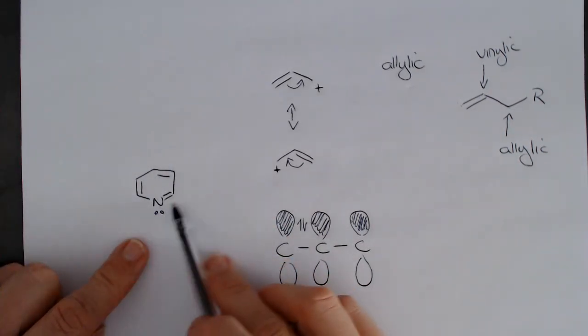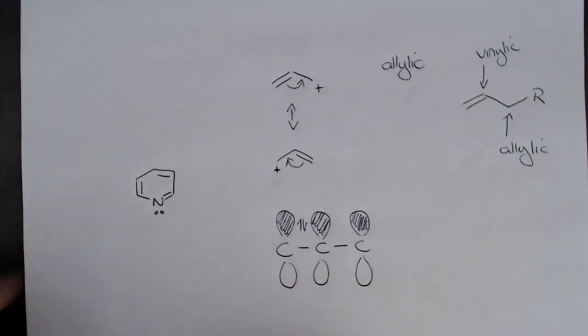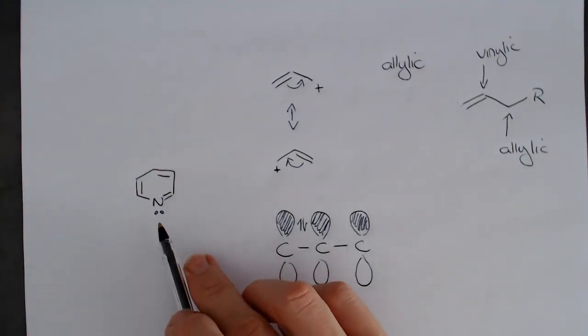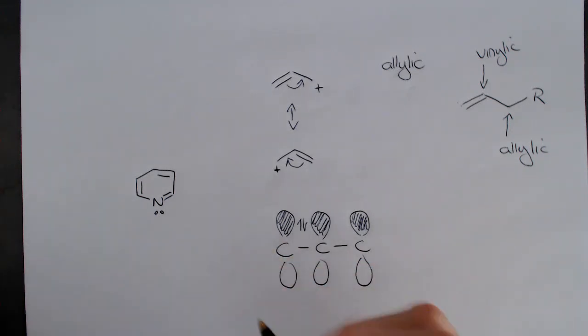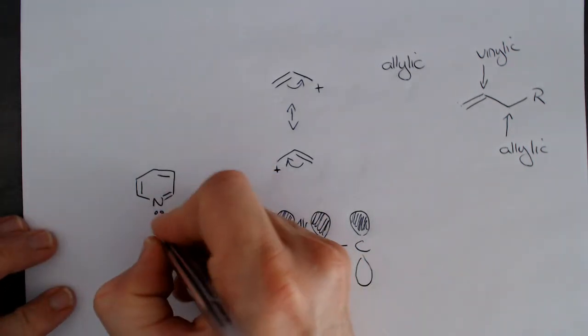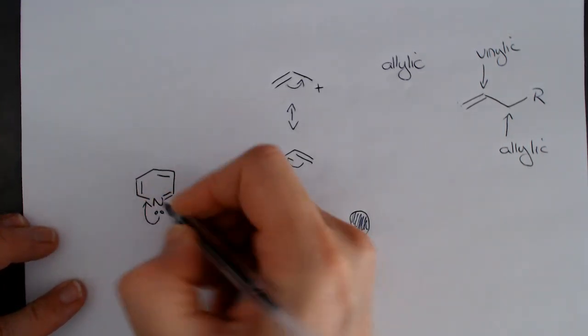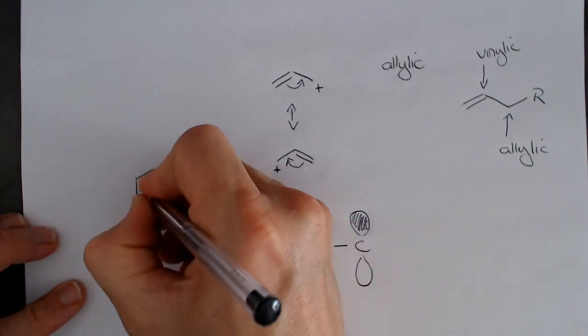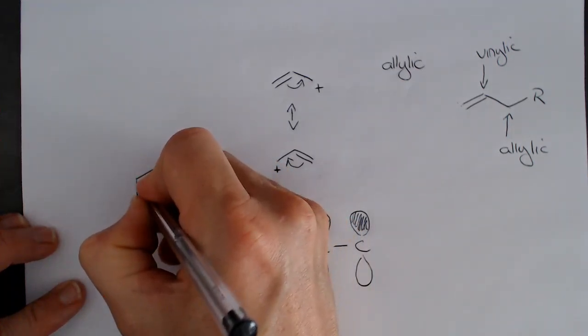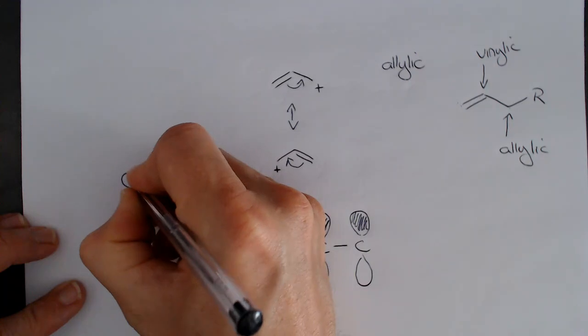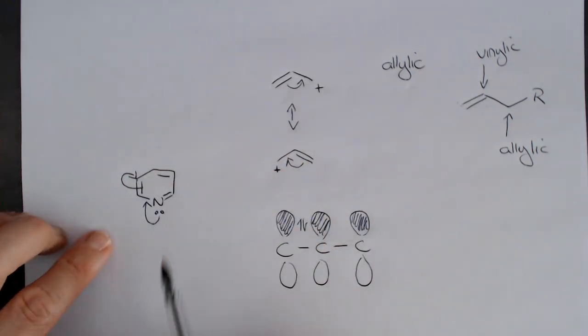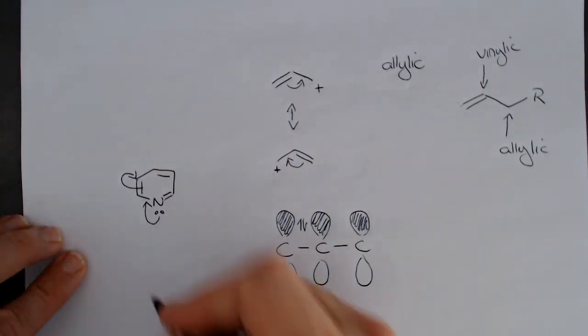We see pi bonds here, and we see a lone pair of electrons. Part of our thinking is that actually the lone pair of electrons might be able to delocalize. So a first-year student might be able to say, well, I can take those electrons, and I can put them into this carbon-sigma bond, and I can break these pi electrons and put the lone pair of electrons now on that carbon over there.